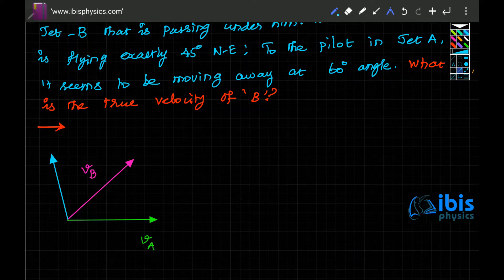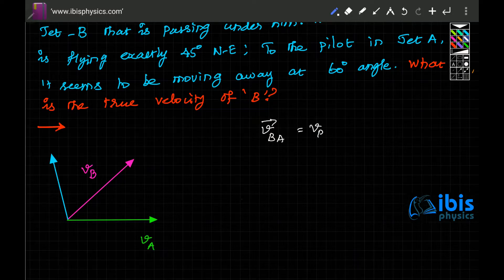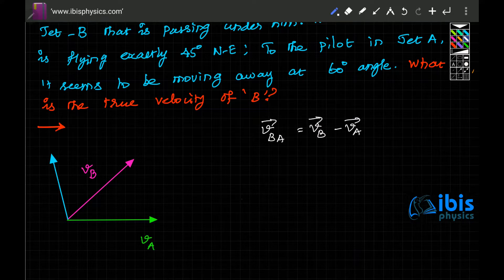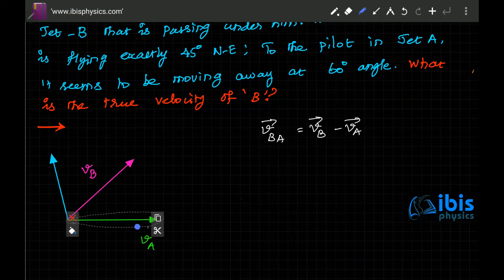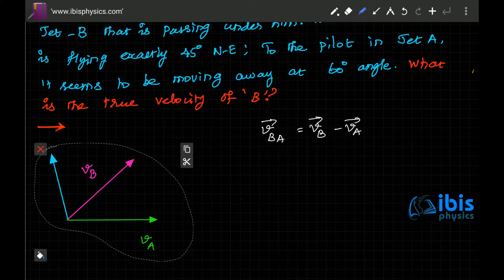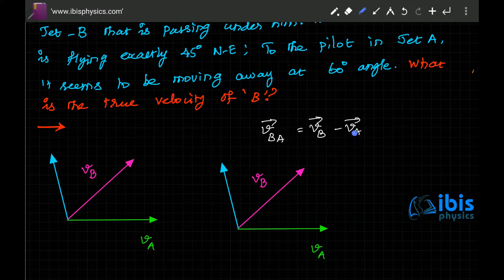So what is relative velocity? You already know that relative velocity of B with respect to A is VB minus VA. So what we are supposed to do is change the direction of this. I will just copy this diagram. Relative velocity of B with respect to A means velocity of B as observed from A, which is VB minus VA.